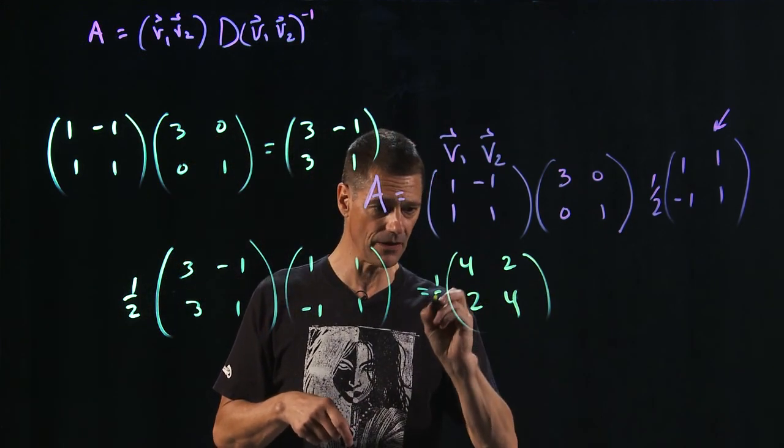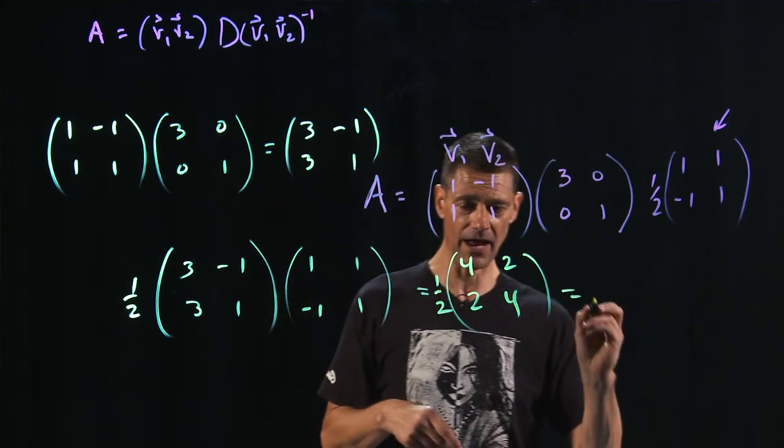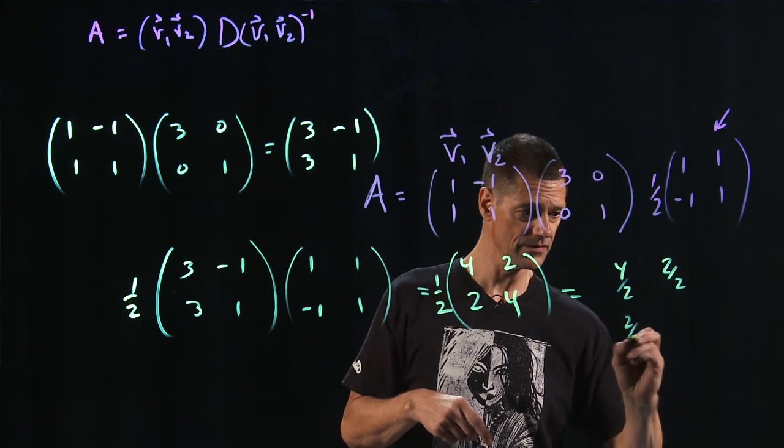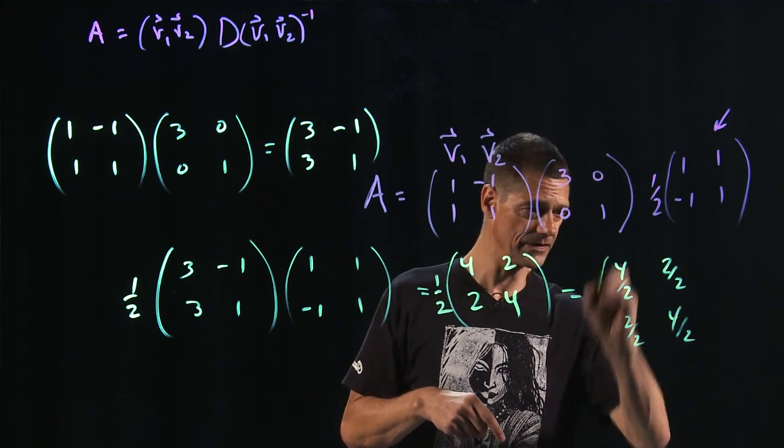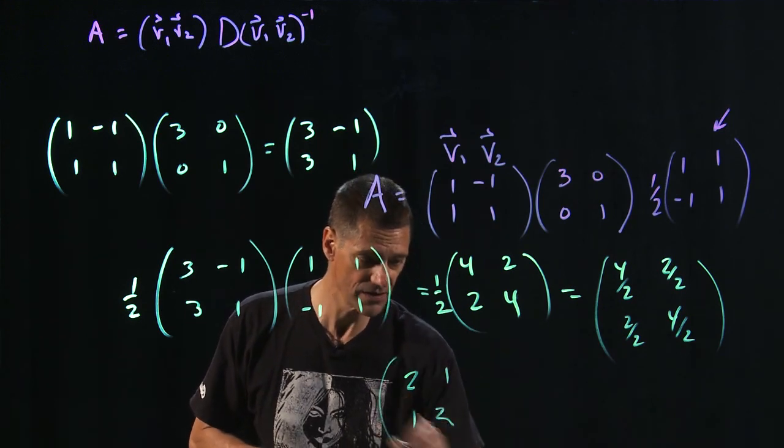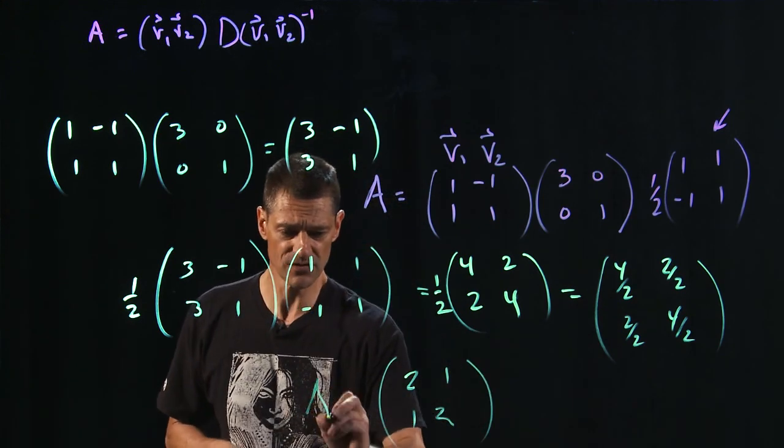And now remember that 1 half is still out here. Now it drives through. When 1 half drives through, this is just 4 over 2, 2 over 2, 2 over 2, and 4 over 2. And this is, of course, 2, 1, 1, 2, which is what we started with, which is A.